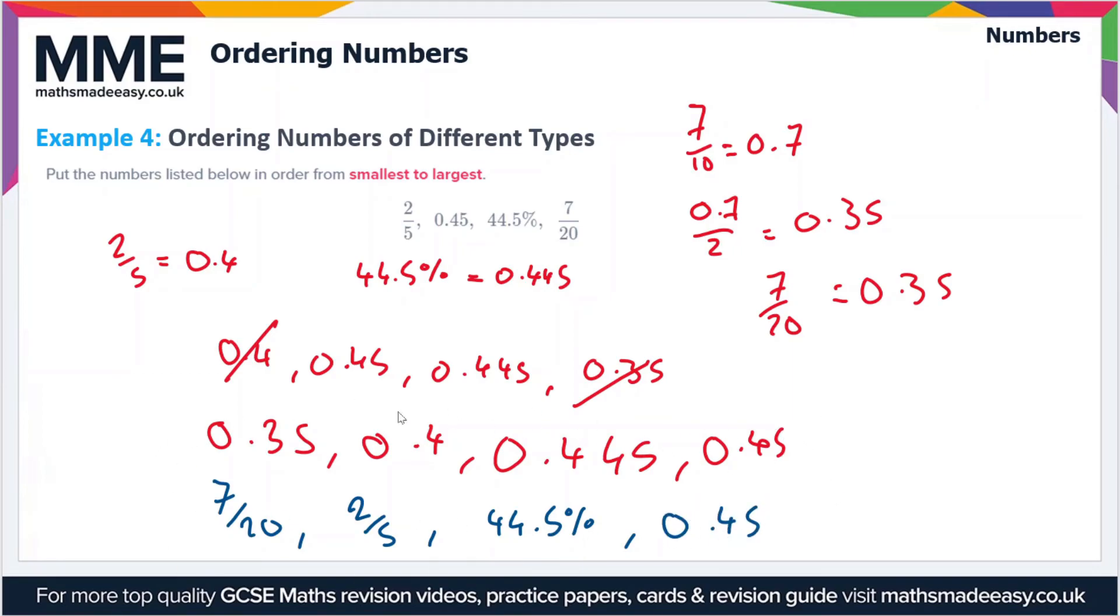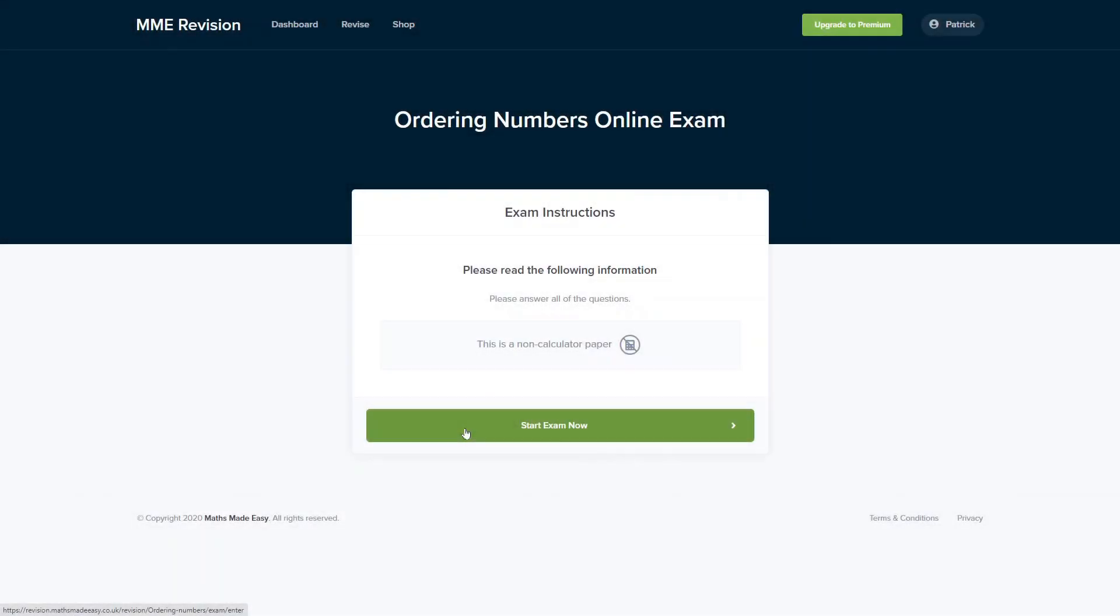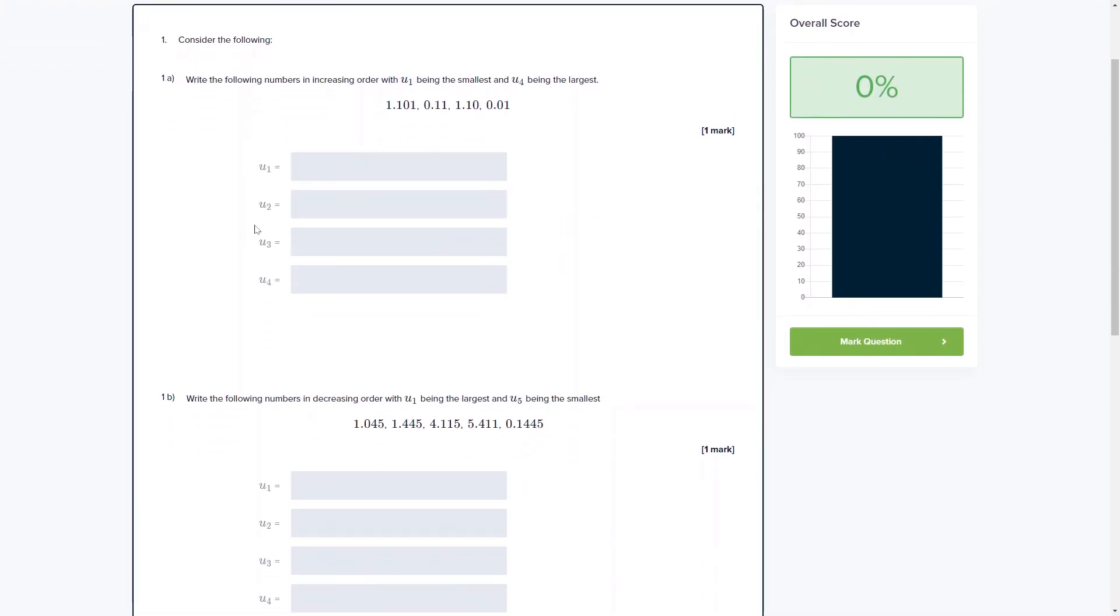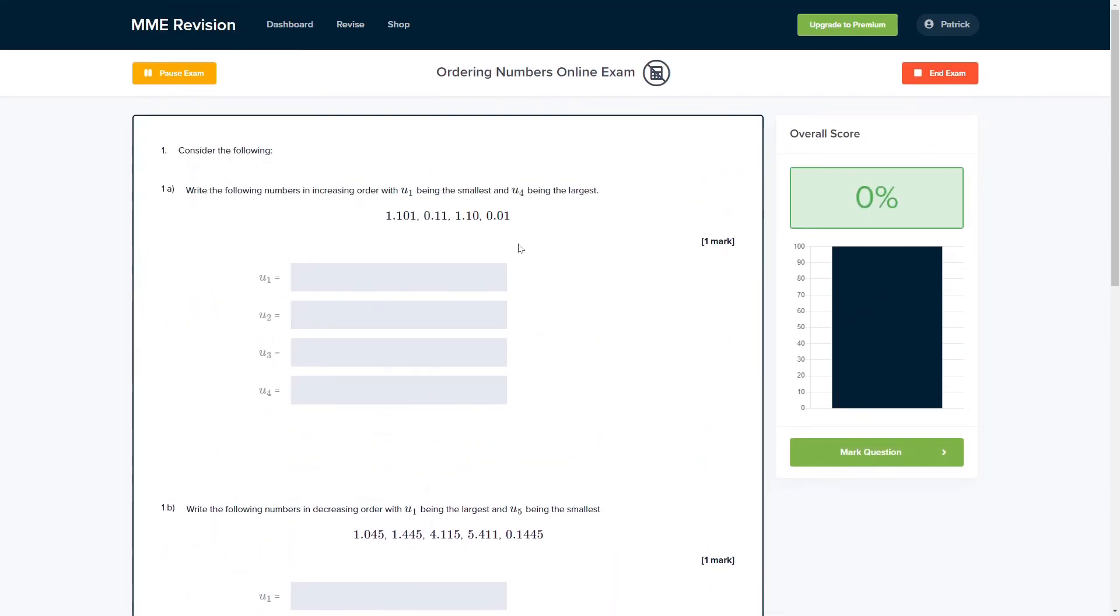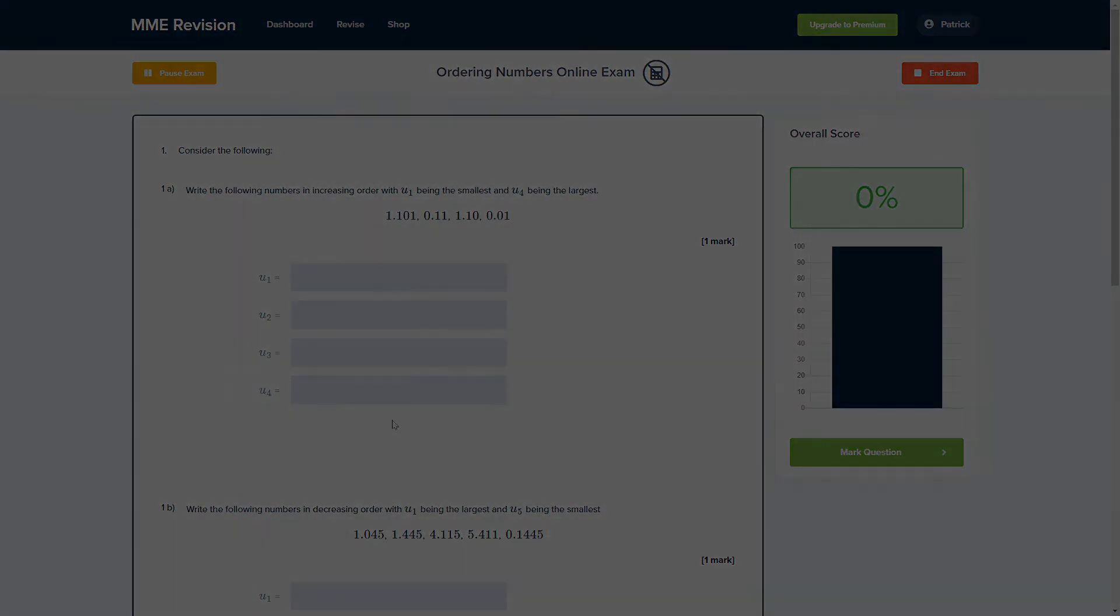If you're feeling ready to test yourself with some ordering numbers questions, you can do so with our online exam. This is available through our revision platform. If you take the test, you'll find loads of different questions to have a go at and get instant feedback on each one. It's a really good way of keeping track of your progress, finding out where you're going wrong, and it will help you prepare for your exam. If this is something you're interested in, you can click the link below.